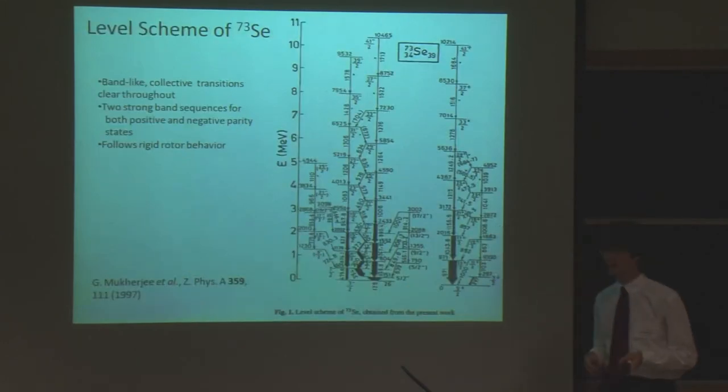If we look at the next highest isotope of Selenium-71, we have Selenium-73, and we can see strong collective behavior with these bands throughout. And there are two bands for each parity, and these bands start on opposite spin assignments. So this one's three halves and this one's five halves, for example.